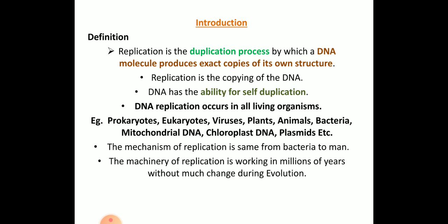DNA replication is the duplication process by which DNA molecules produce exact copies of themselves. For example, if a sequence contains ATGC — adenine, guanine, cytosine and thymine — the complementary sequence is obtained using Chargaff's rule. That same sequence will be reproduced, and that is called replication.